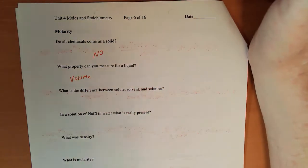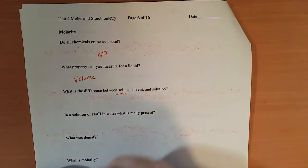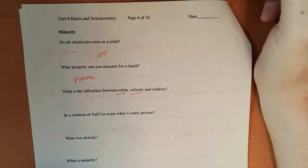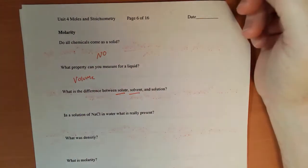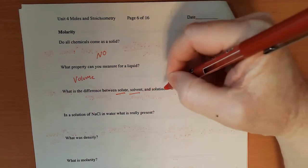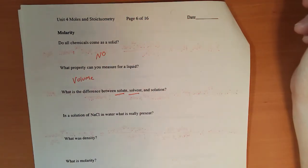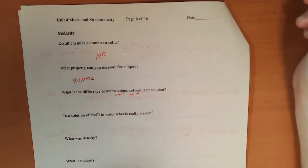So when you have a solution, the solute is what you have less of. The solvent is what you have more of. Or the solute is the chemical and the solvent is the water. And when you put them both together, you get the solution. And we're interested in finding out how much solute is present.